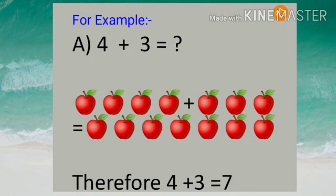For example, 4 plus 3. Here first we will take 4 apples, plus we will add 3 more apples. So we will get total 7 apples. Therefore, 4 plus 3 is equal to 7.